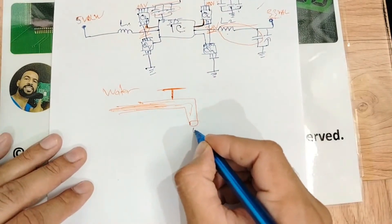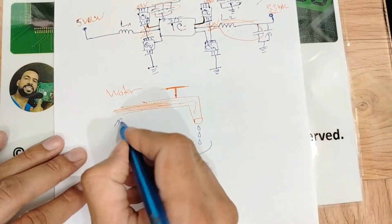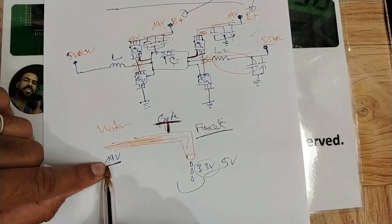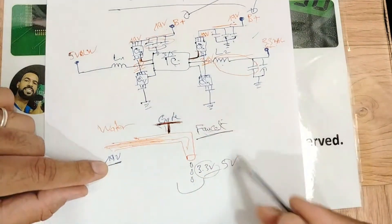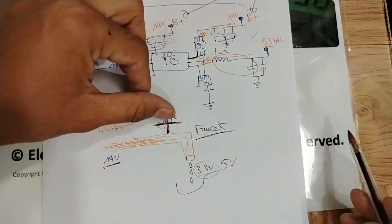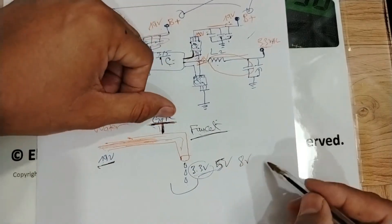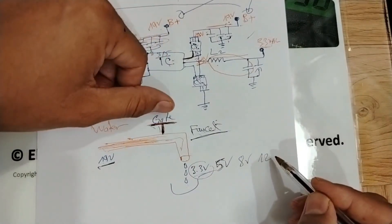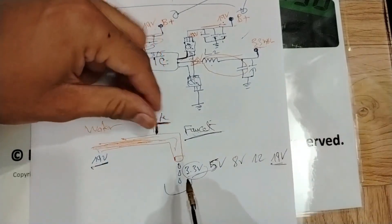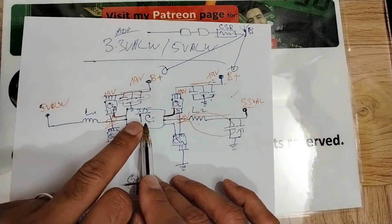Think of it like water: we have a lot of water coming in — that's 19 volts. But here, using a gate, we get just a little — 3.3 volts. If we turn the gate a little, we get 5 volts; turn it more, we get 8 volts; more still, 12 volts; and at maximum we get 19 volts. So the same working principle is used with the 3.3-volt IC — the gate controls how much voltage comes through.